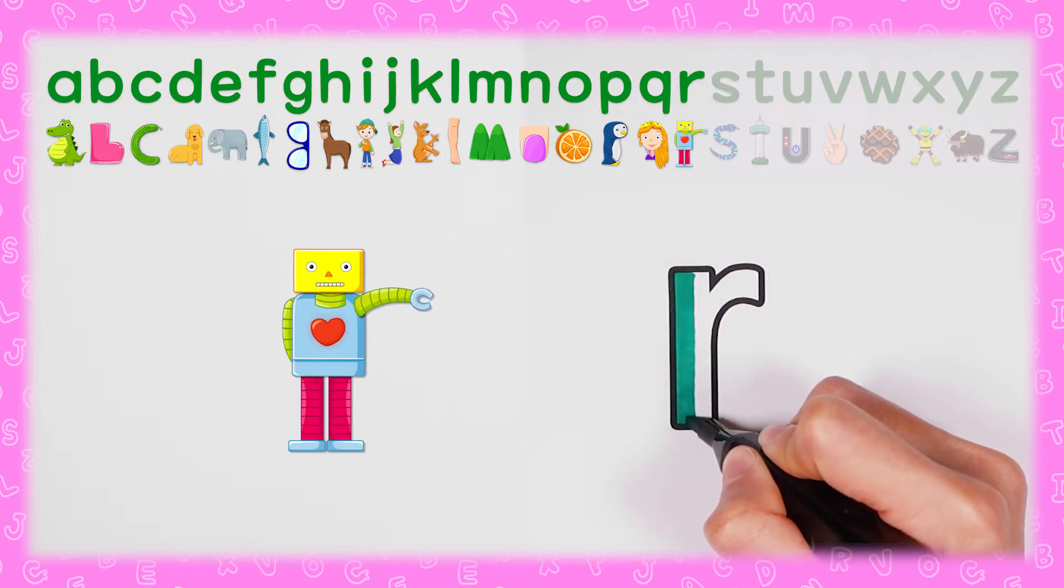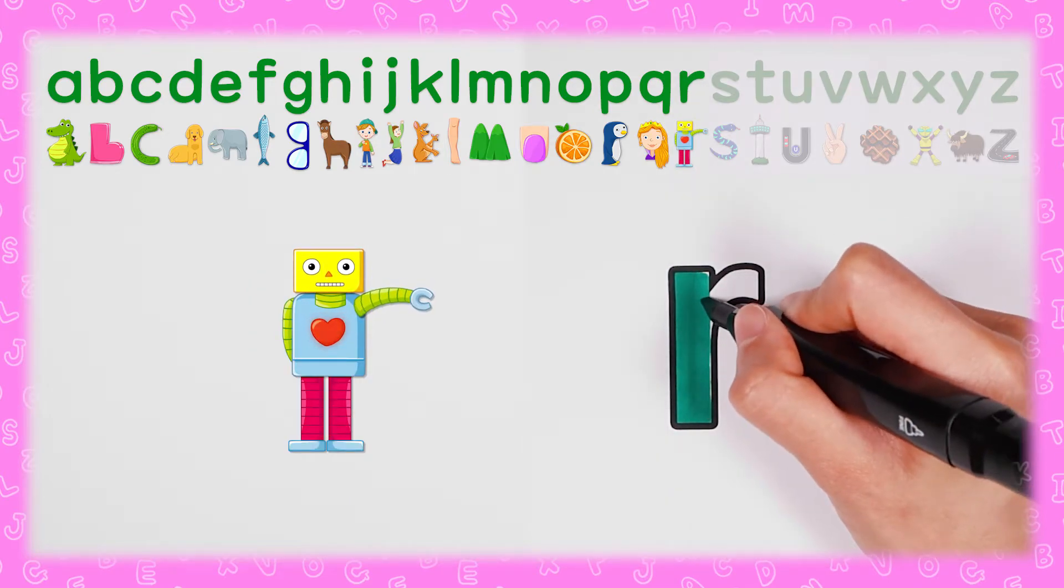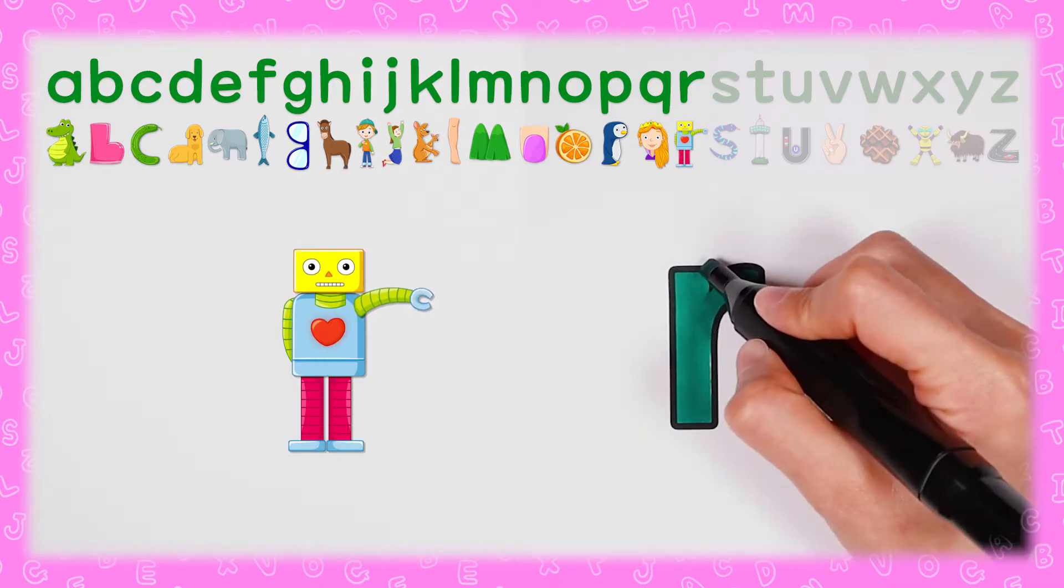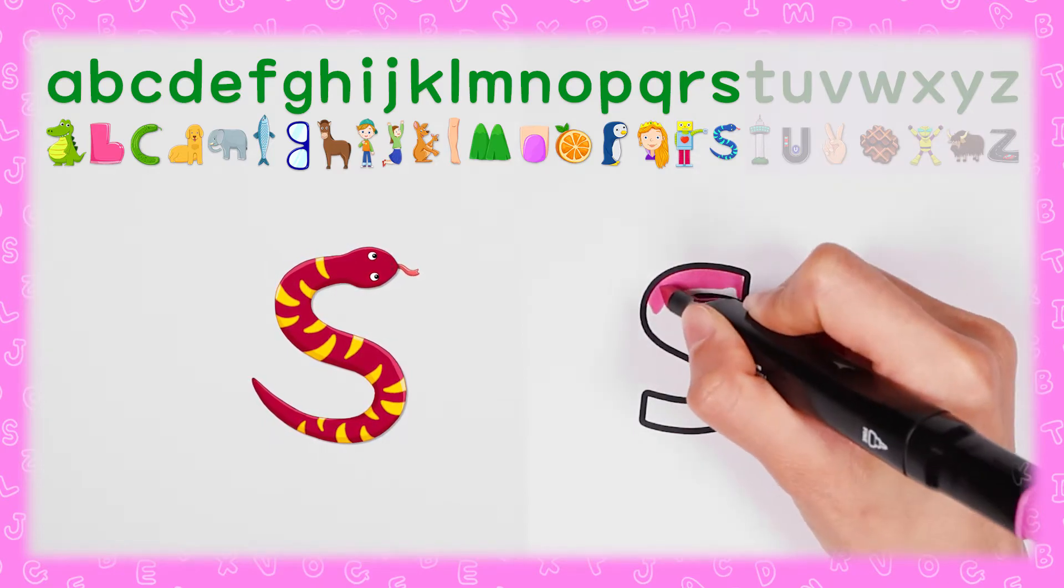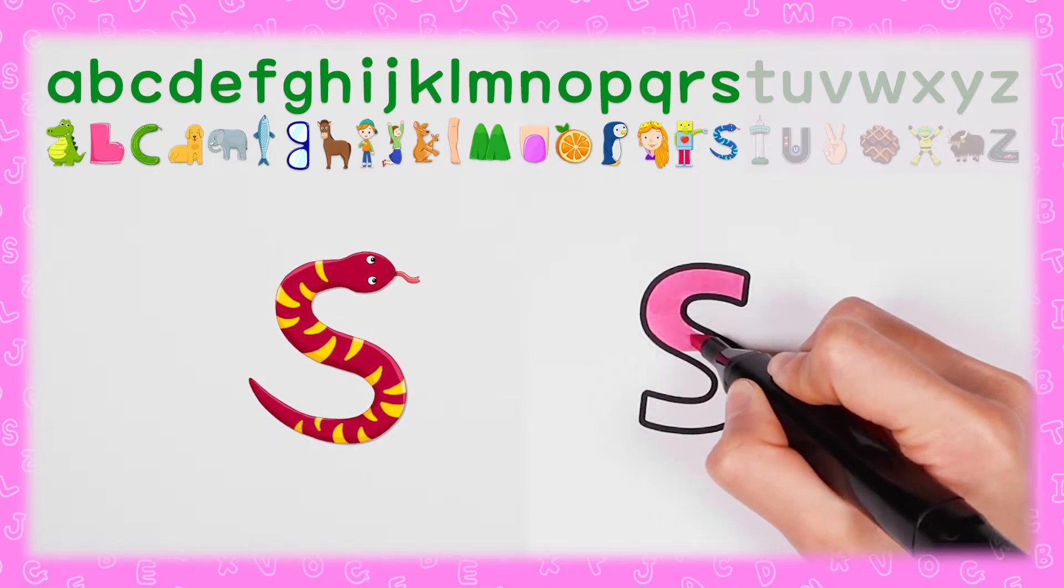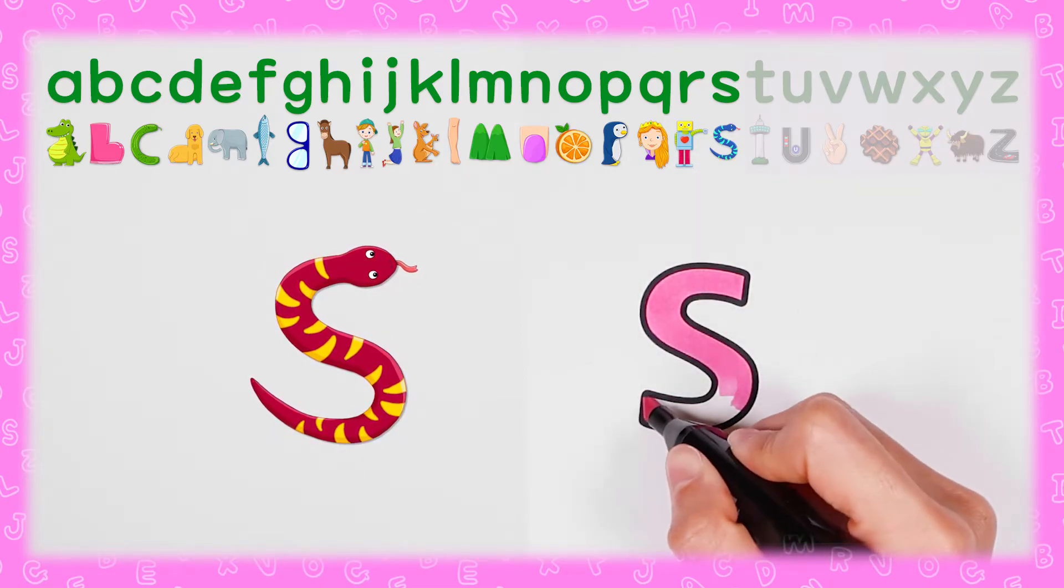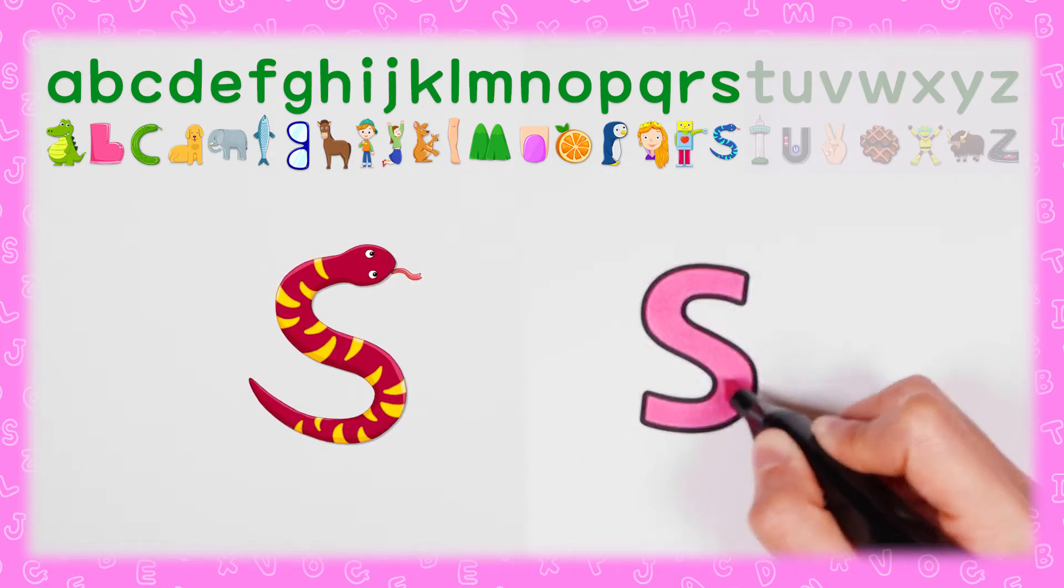R, 한 손든 로봇 R R (robot with one hand raised). S, 구불구불 스네이크 S S (wiggly snake)